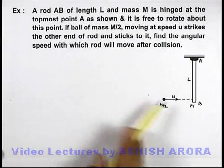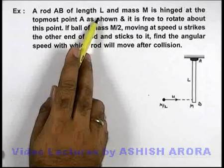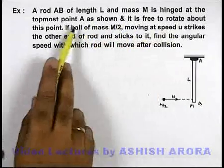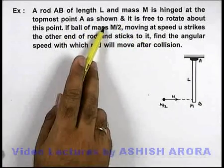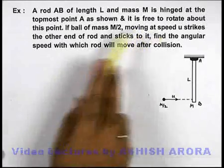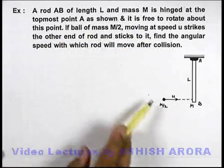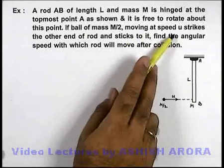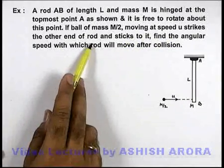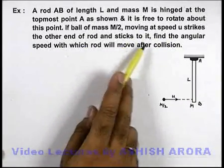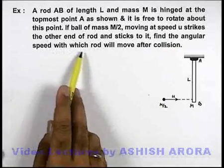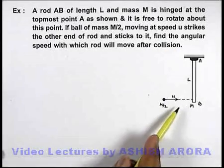In this example, we are given that a rod AB of length L and mass M is hinged at the topmost point A as shown, and it is free to rotate about this point. If a ball of mass M/2, moving at speed u, strikes the other end of the rod and sticks to it, find the angular speed with which the rod will move after collision.